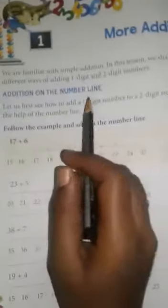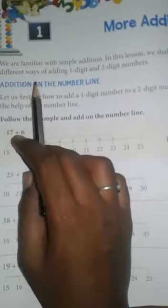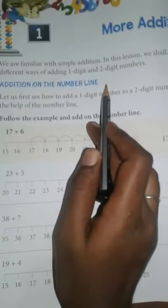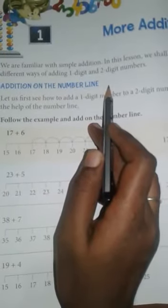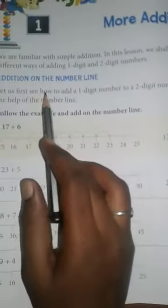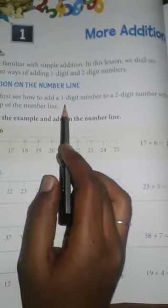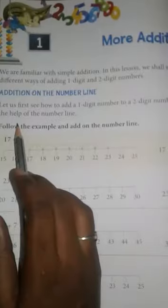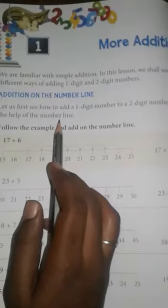In this first lesson, our first concept is addition on the number line. Today, we are going to learn addition on the number line. Let us first see how to add one digit number to a two digit number with the help of number line.